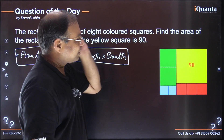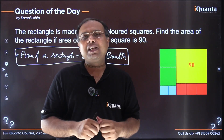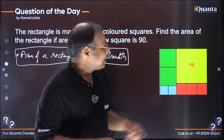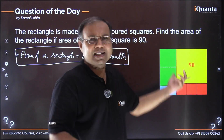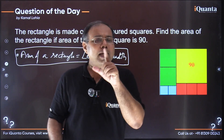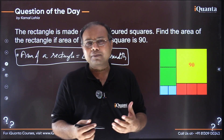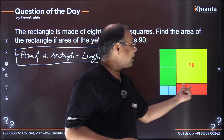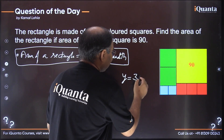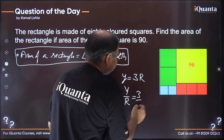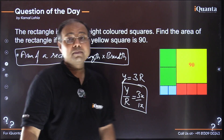The important clue is to look for equal lengths — which lengths can be compared with each other. Let me assume the length of the yellow square is y and the length of the red square is r. You can see that one side of the yellow square covers exactly three sides of the three red squares, so y = 3r, meaning y/r = 3/1.